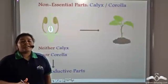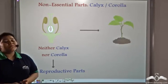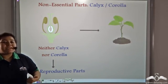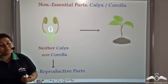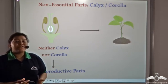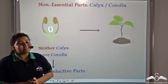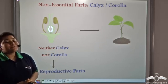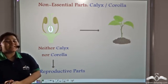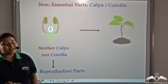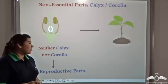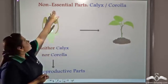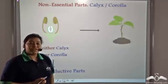But the flower can survive without the corolla and the calyx. This is because their main function is to provide protection and to add vibrancy and brightness to the flower. Even without them, reproduction can still take place. And so, the calyx and the corolla are known as the non-essential parts of the flower.